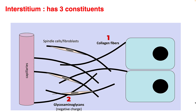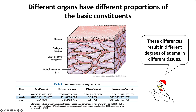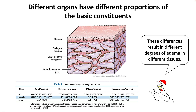It has a gel phase made up of glycosaminoglycans, and between the gel phase there is an aqueous phase where water can flow easily. Different organs have different proportions of these basic constituents, and these differences result in different degrees of edema in different tissues. Note the ratio of collagen to glycosaminoglycans and hyaluronan in different body tissues — skin has more collagen to glycosaminoglycans ratio compared to muscle or lungs. We will understand the significance of these ratios as we progress.